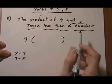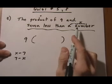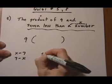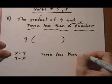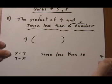So instead of just looking at a number x, think about what if you had the number 10. If I said 7 less than 10, well, that would be equal to 3.